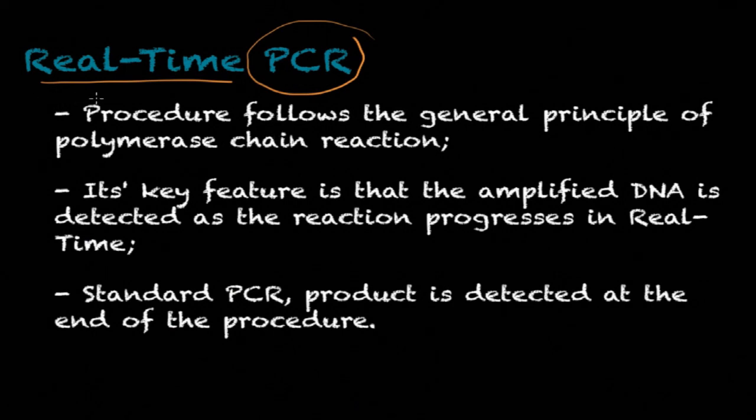Real-time PCR will follow the general principles of polymerase chain reaction, but the main thing here is that its amplified DNA is detected as the reaction progresses in real time, rather than standard PCR where the product is detected at the end of the procedure. So you're able to measure the concentration of your amplified product throughout the whole polymerase chain reaction.